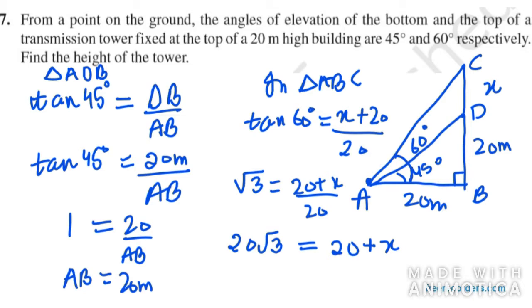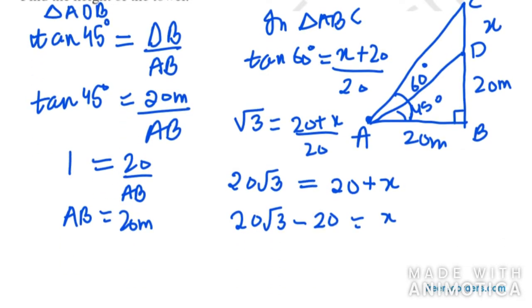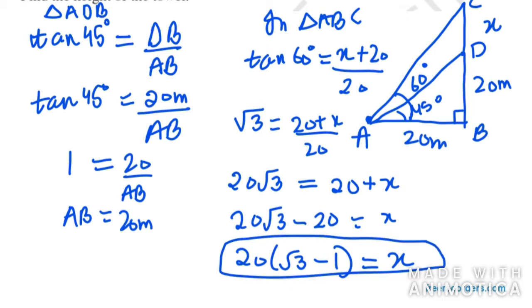So the value for this will be 20 under root 3 minus 20 equals X. Now from this you can take common 20, so you are left with answer under root 3 minus 1 equals X. So this is the answer for this question. That means the height of the tower is 20 under root 3 minus 1.